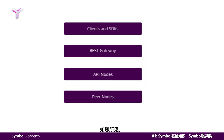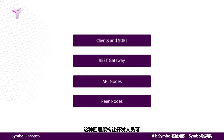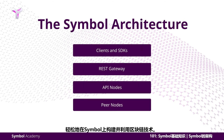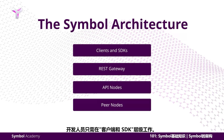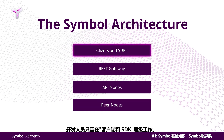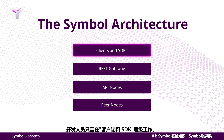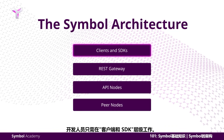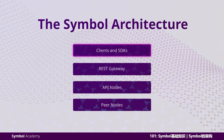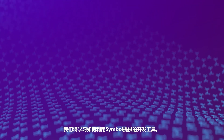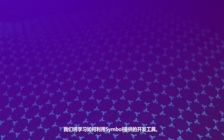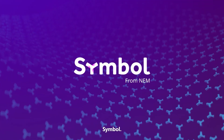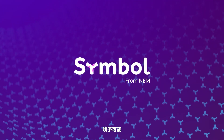As you can see, the four-tiered architecture gives developers an easy way to build on Symbol and utilize blockchain technology. Developers will only need to work on the clients and SDKs tier. In upcoming lessons, we'll learn how to take advantage of development tools that are provided by Symbol. Symbol — Powering possibility.